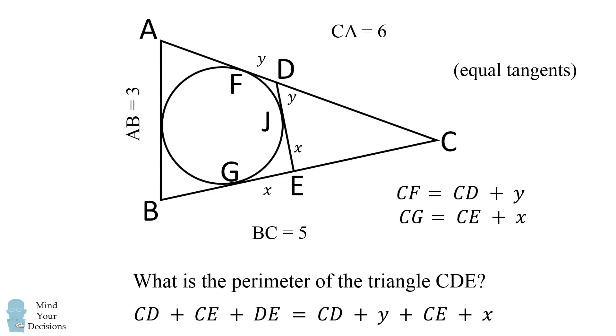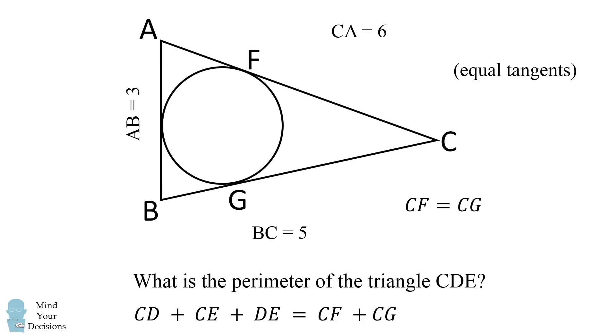So we can substitute these in to get that the perimeter is equal to CF plus CE plus X, which then simplifies to be CF plus CG. We can make one more simplification. In particular, CF is equal to CG because of the principle of equal tangents. Therefore, the perimeter of triangle CDE is equal to 2 times CF.